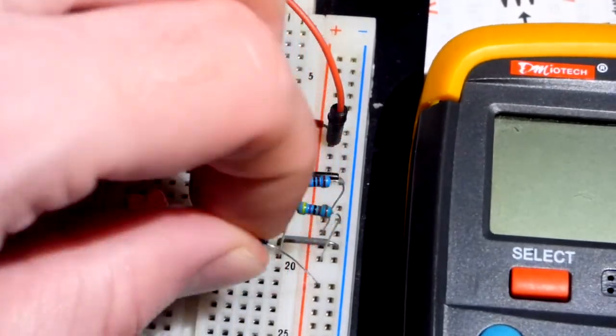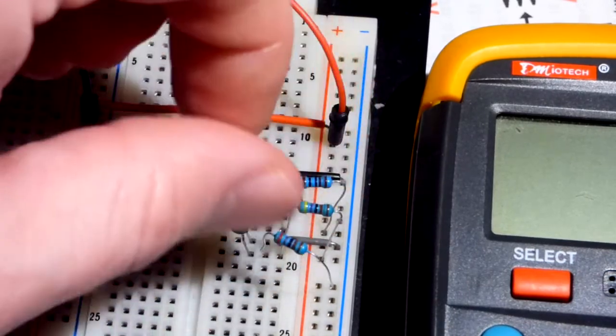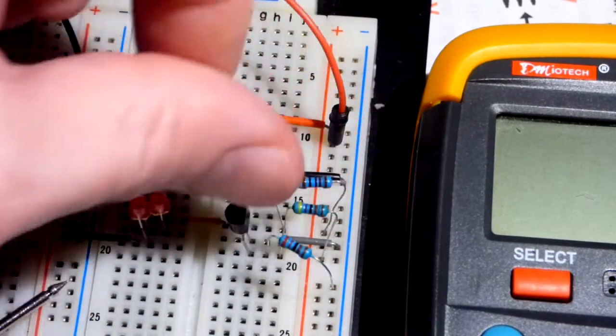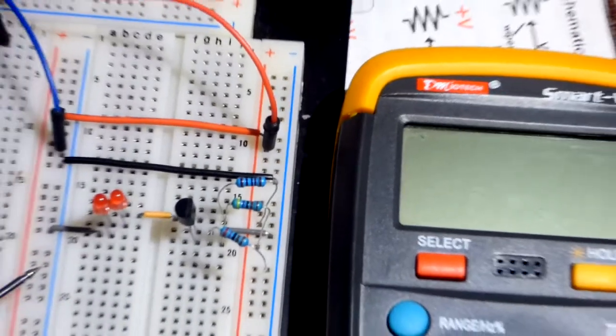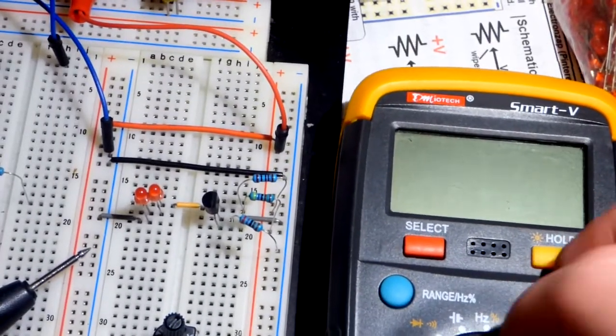Oops, I put that to the positive side. That needs to go to the negative side right there. So now we have a voltage divider, positive and negative. So we will zoom back again and we will test it out again.